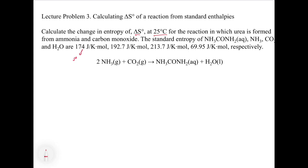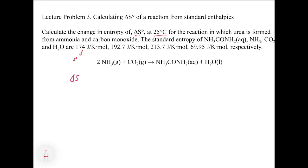A couple of things first: we have delta S0 and 25 degrees Celsius, which makes sense because these are all S0 values, so we need to be under standard conditions. We have our reaction: 2NH3 plus CO2 gives urea and water. When we set this up, we set up our equation with delta S0 on one side and start figuring out what we've got, beginning with our products.